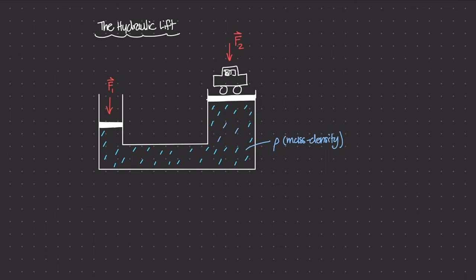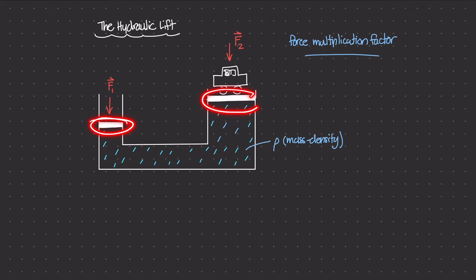We're also going to get into the term called the force multiplication factor. This term is important in hydraulic systems, especially hydraulic lifts. The basic definition is that we use the two different areas of the pistons, and the ratio between these areas is what we call the force multiplication factor. That ratio amplifies force one on the second piston to counteract F2.